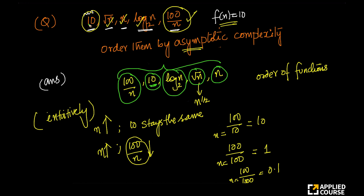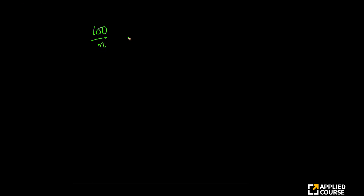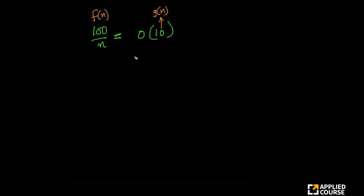So 100 by n grows slower than a constant, which grows slower than log n, which grows slower than square root of n, which grows slower than n. The tricky part in these functions is comparing 10 and 100 by n. I will also prove this in a slightly different way. Let's take 100 by n and 10. I will prove that 100 by n is Big O of 10. If you think of 100 by n as f of n and 10 as g of n, to prove this I need to show that some constant c times 10 is greater than or equal to 100 by n for all n greater than or equal to n₀, and there exist some constants c and n₀ which satisfy this.